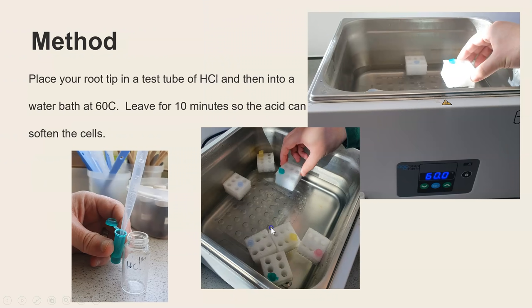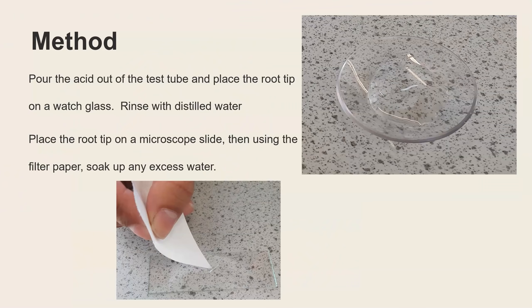Once we've done that we then add our root tip into a test tube with hydrochloric acid and we also put it into a water bath at 60 degrees C. We leave that for 10 minutes and this is the stage that we said the acid and with that heat it will start to soften the cells.